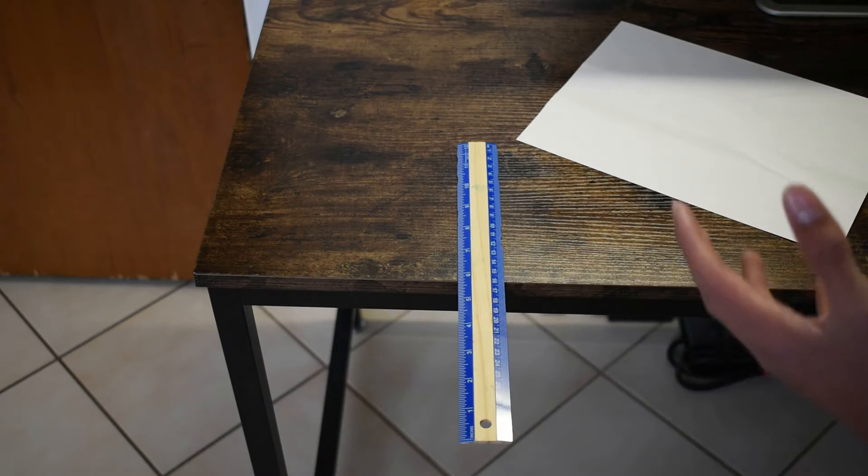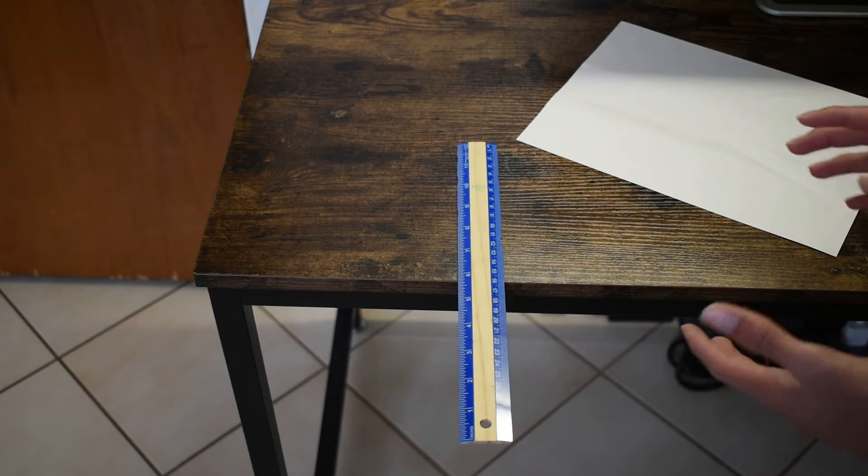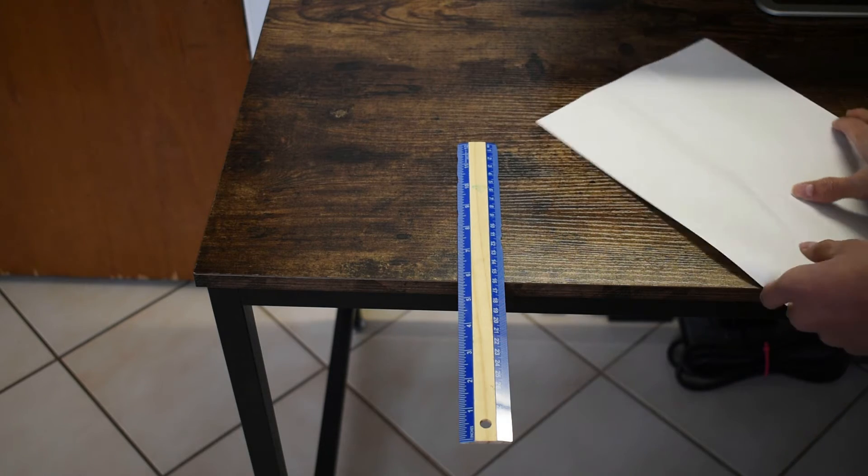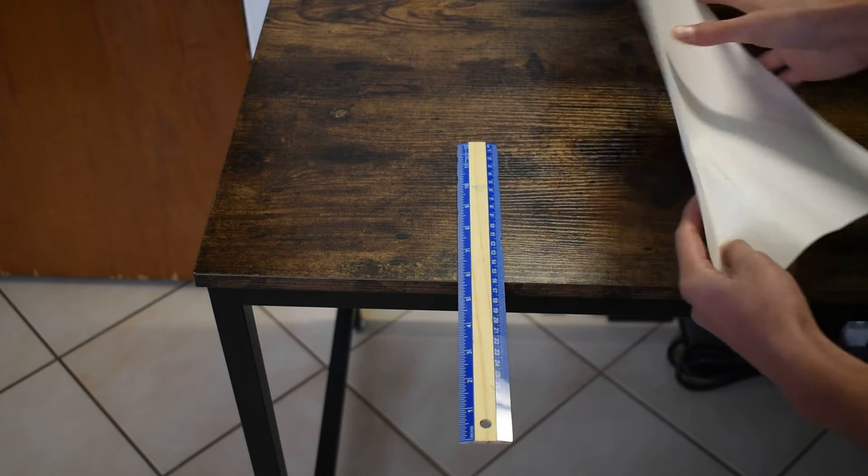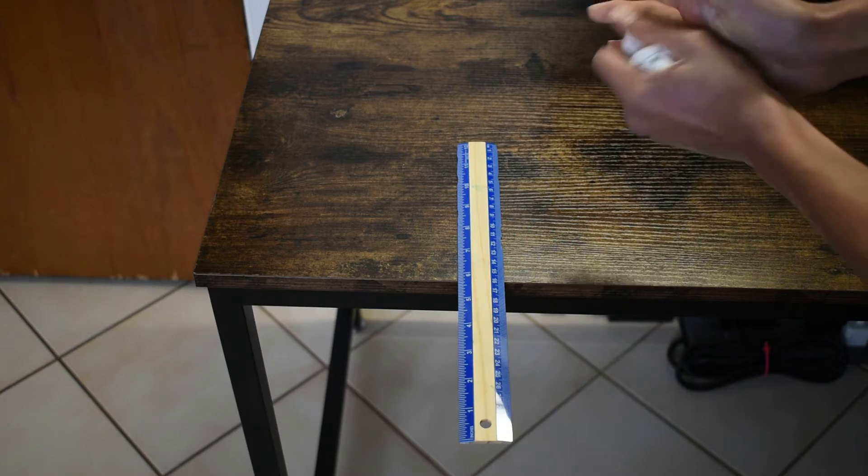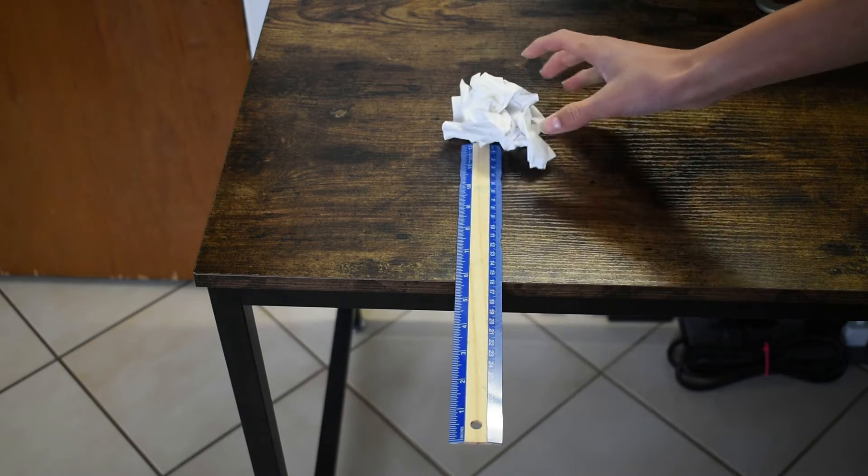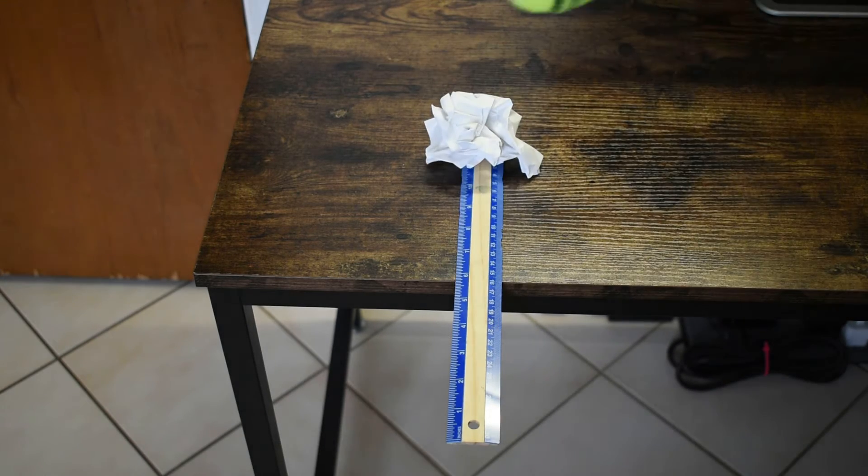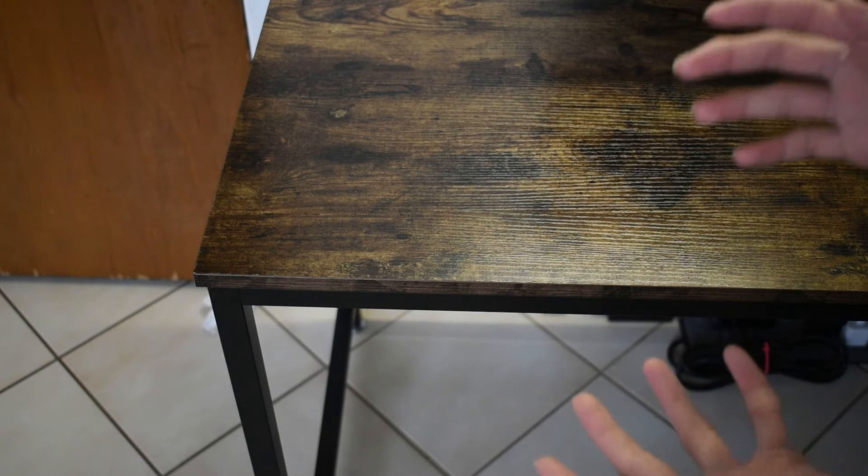And it falls right off. So how is it doing this? Well first, let's just check to make sure it's not the weight of the paper that's keeping it down. So I'm gonna crumple this and put it on top of here, and let's do the same thing. I'm gonna drop it and it flies right off.